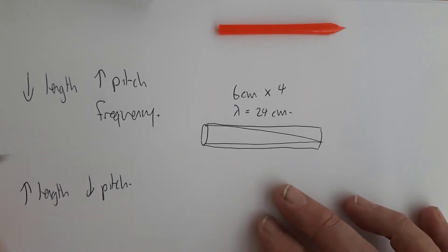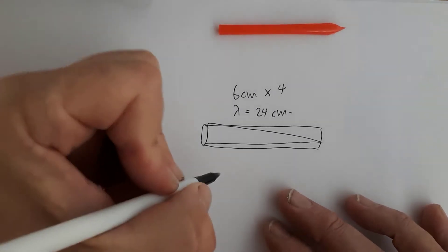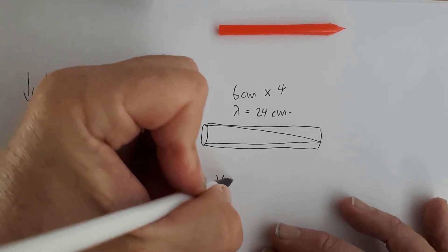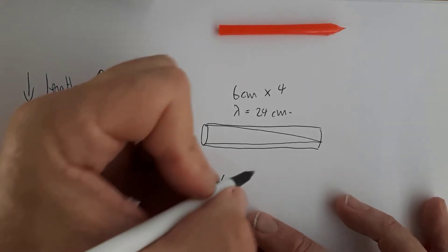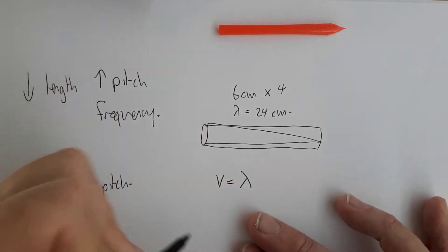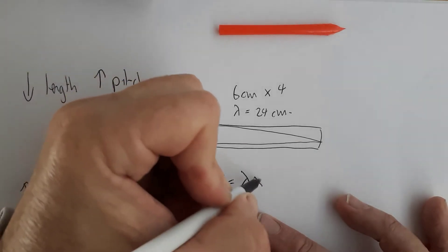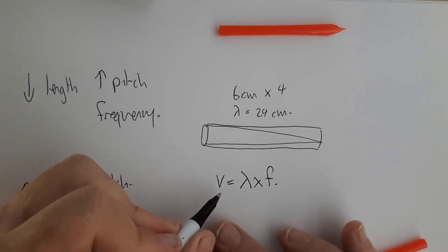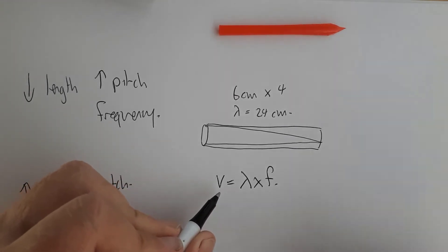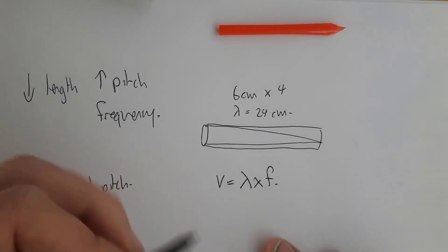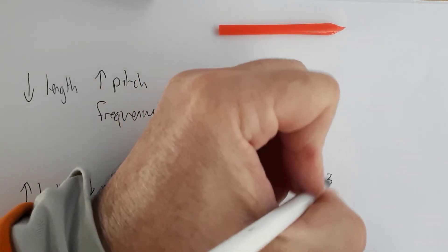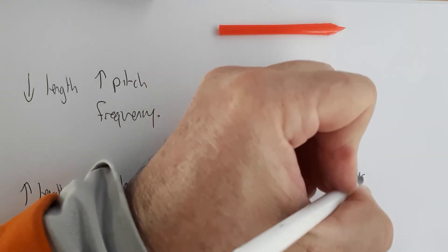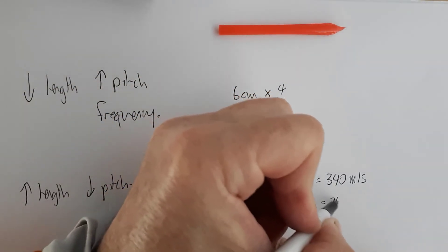Now, to work out the frequency of the sound, we use this formula. The speed of the sound is equal to the wavelength times by the frequency. Now, let's assume, given that it's about 18 degrees in here, let's assume that the speed of sound in the air at the moment is 340 meters per second. And we know our wavelength is 24.